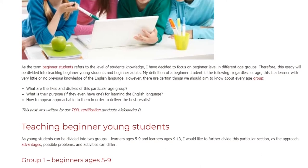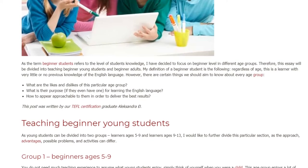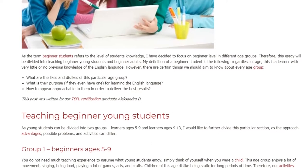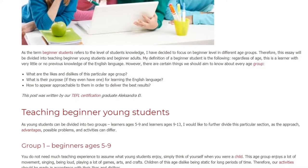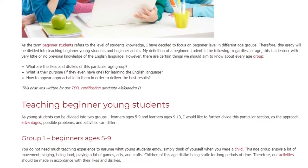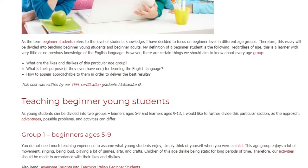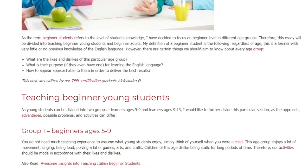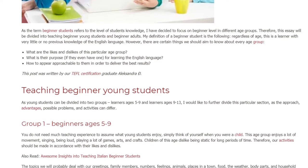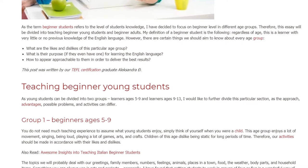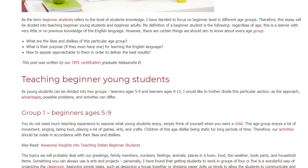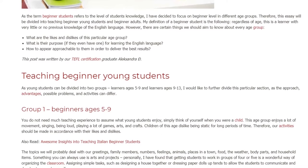Teaching Beginner Young Students. As young students can be divided into two groups — learners ages 5–9 and learners ages 9–13 — I would like to further divide this particular section, as the approach, advantages, possible problems, and activities can differ. Group 1: Beginners Ages 5–9. You do not need much teaching experience to assume what young students enjoy; simply think of yourself when you were a child.